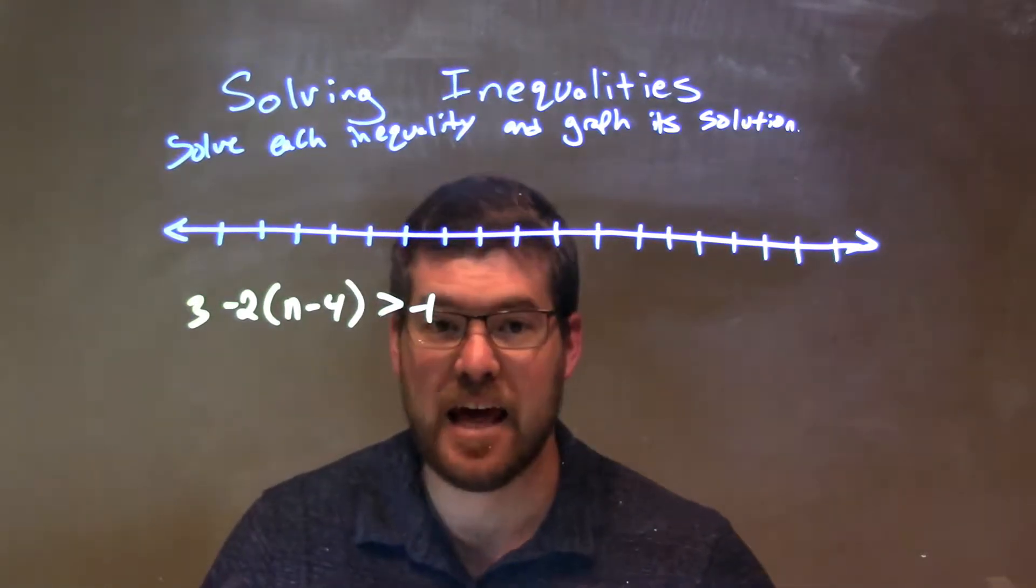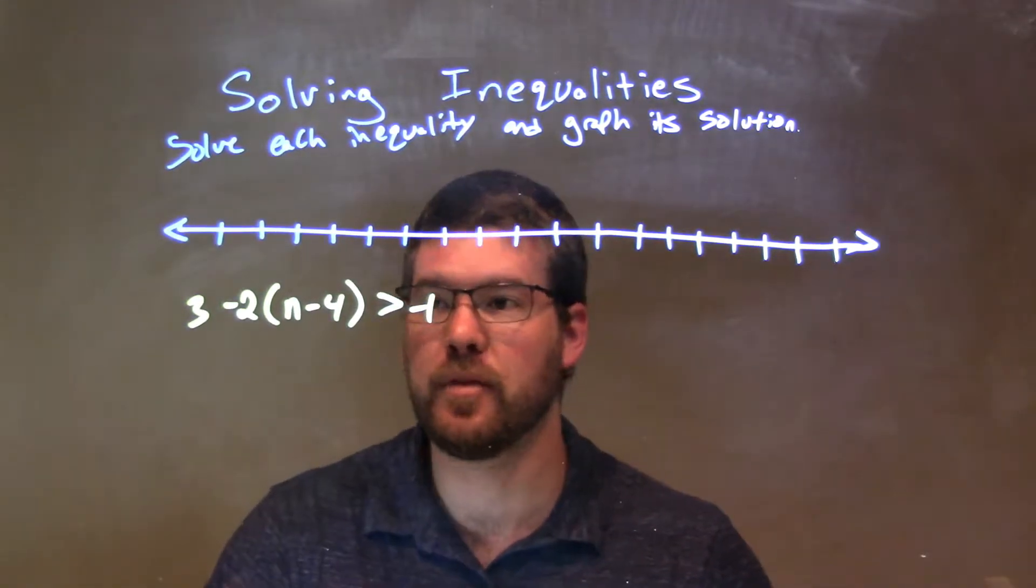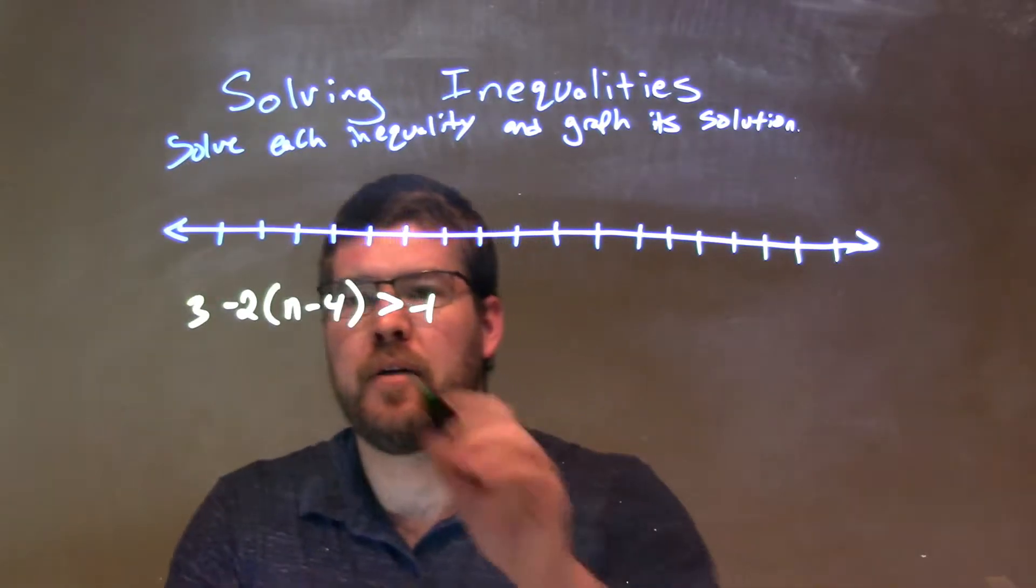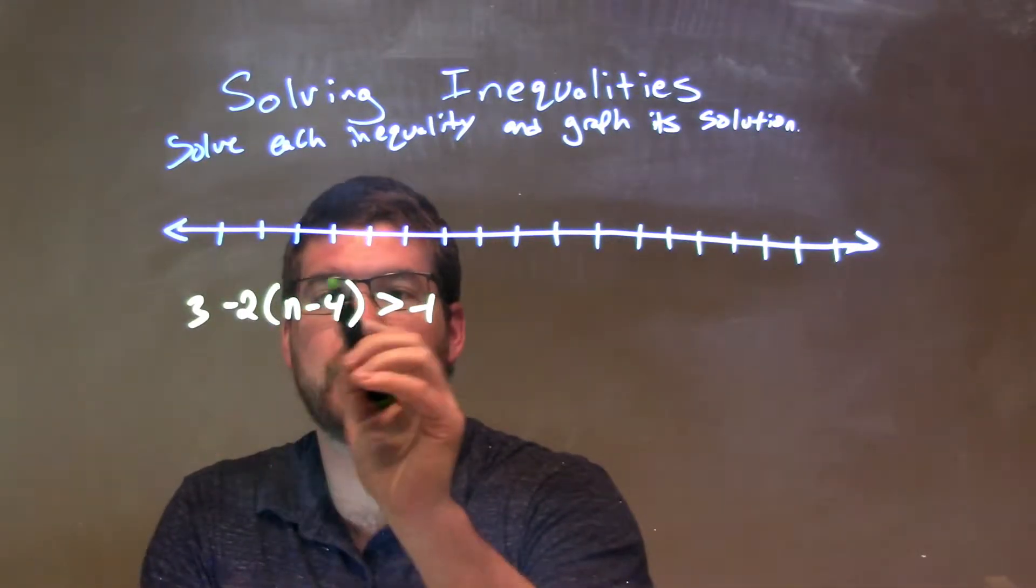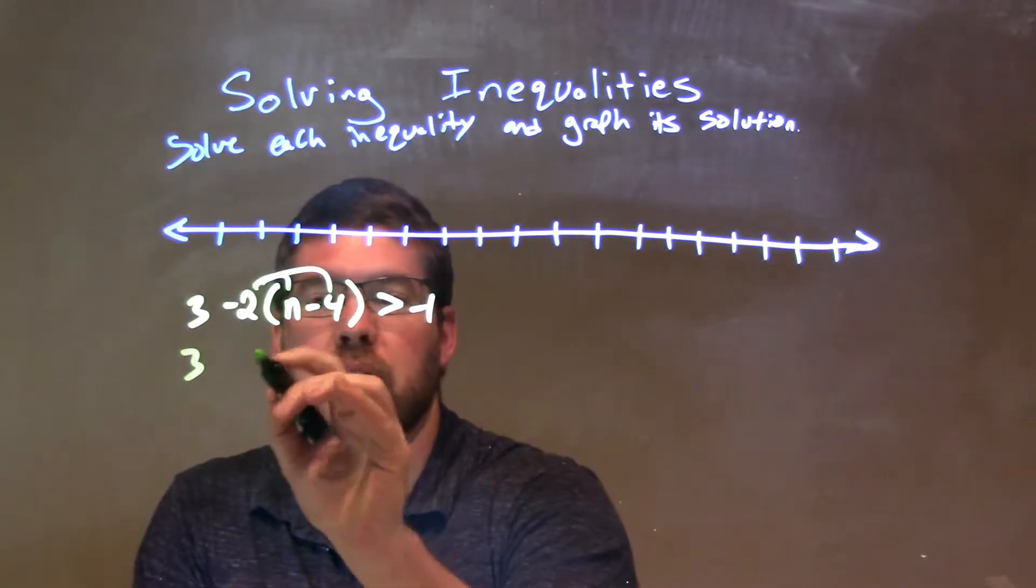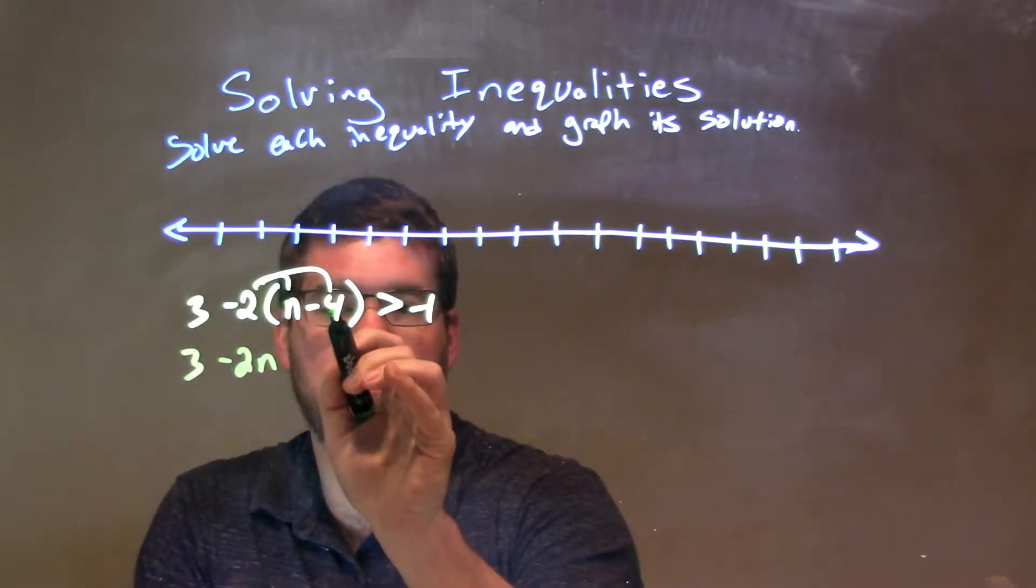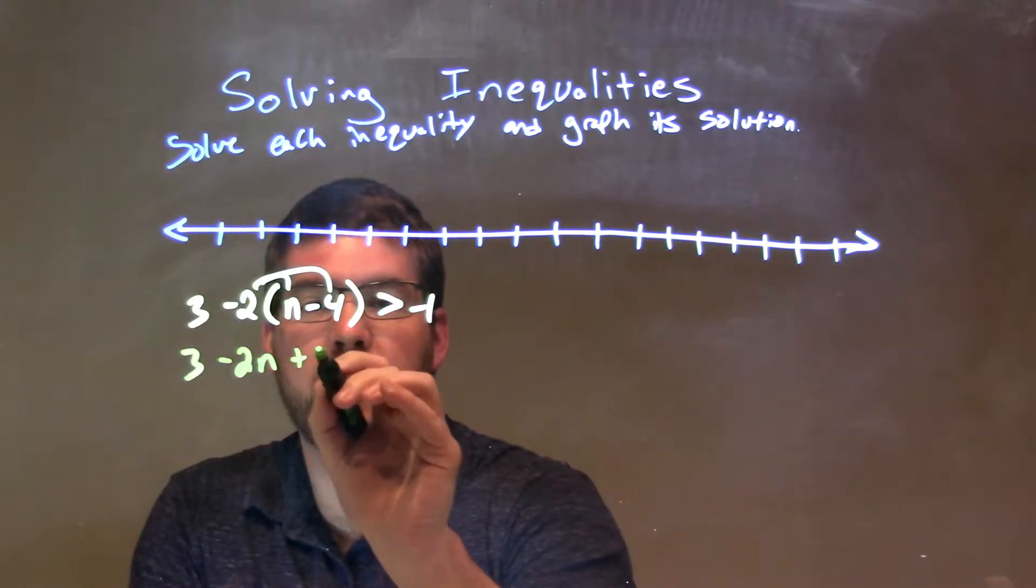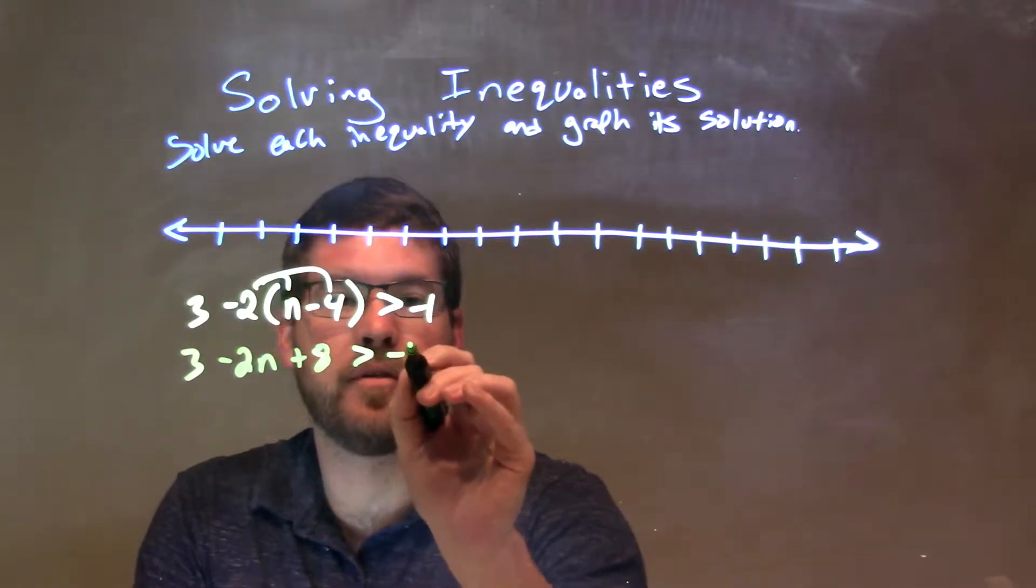So from here, what I want to do is get n by itself. We've got to simplify it a little bit. It's up to you how you want to do it, but I'll first distribute this negative 2 across. So, I have 3 here, and then negative 2 times n is negative 2n, and negative 2 times negative 4 is positive 8. So, plus 8 here is greater than negative 1.